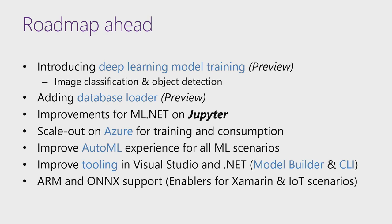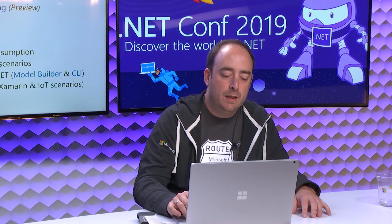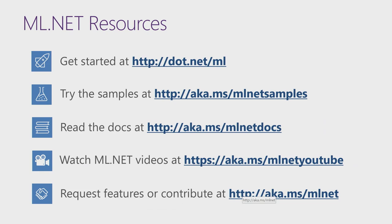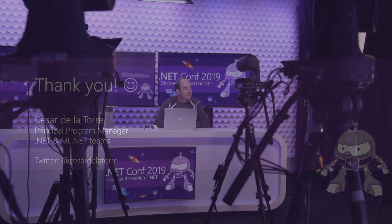On the roadmap: we're going to be investing in deep learning, not just for image classification but also for object detection natively in TensorFlow. We'll be moving the database loader to GA, making improvements for Jupyter and moving that to preview, and we're working with the Azure ML team on integrating ML.NET with Azure ML. Here are a few links for getting started, samples, docs, and videos. Thank you.